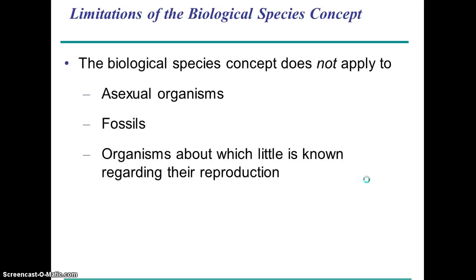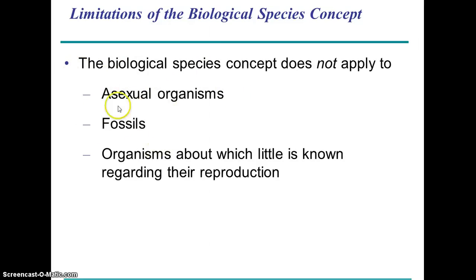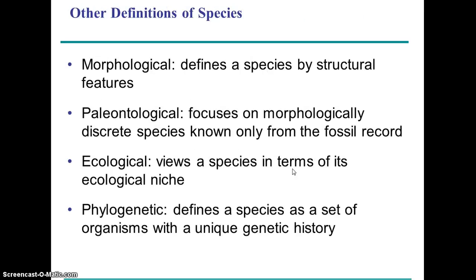The biological species concept has its limits, because you can only define a species based on the ability to mate sexually. There are some asexual organisms, like bacteria, so it's hard to use that concept for them. For extinct species we only have fossil evidence — we obviously can't tell whether things were mating with each other. And if you don't know much about the reproduction of a group, it's hard to use the biological species concept.